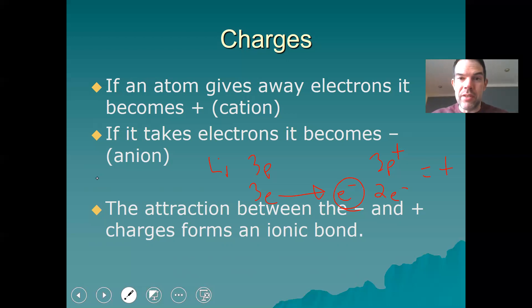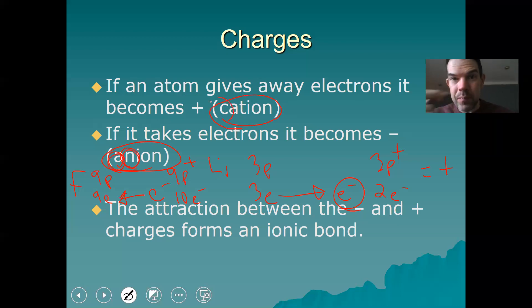Now, if it takes electrons, so something that might take electrons might be a fluorine, for example. Fluorine is F. Fluorine is nine, nine protons and nine electrons. Now it wants that 10th electron because that will give it a full shell. It's going to take one more. So it's going to end up having nine protons and 10 electrons. And remember, electrons are negative and protons are positive. So it's going to overall be a single negative. So it takes an electron, taking negative, accepting negative, makes it negative. And it's called an anion. The way to remember that is A, N for negative, a negative ion.